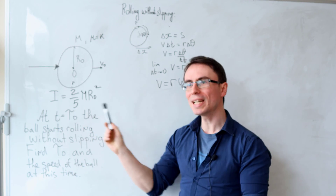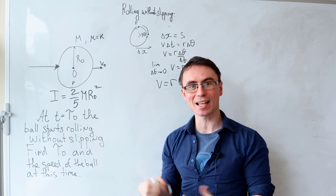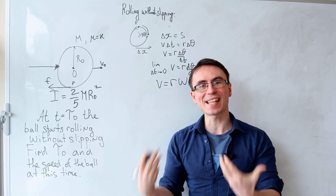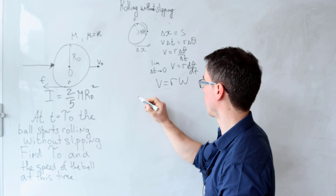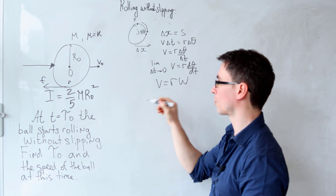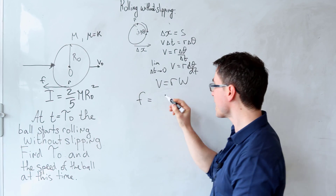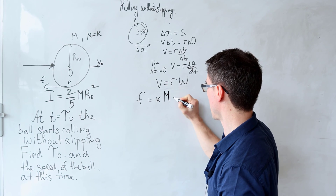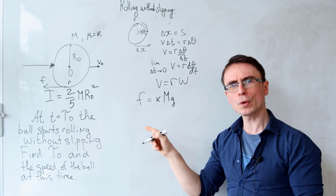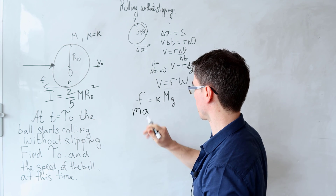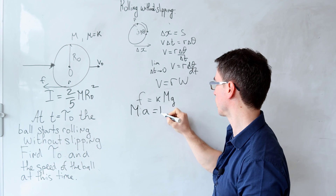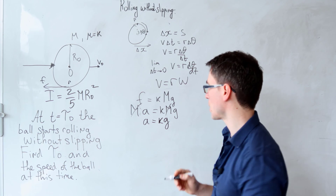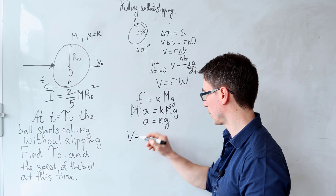After the ball is initially hit it acquires speed v₀ and then starts decelerating due to friction acting along the surface. Applying Newton's second law: the only horizontal force is friction, equal to k times the normal reaction. Since the normal reaction is mg, the friction force is kmg. Setting this equal to mass times acceleration gives the deceleration of the center of mass as kg.